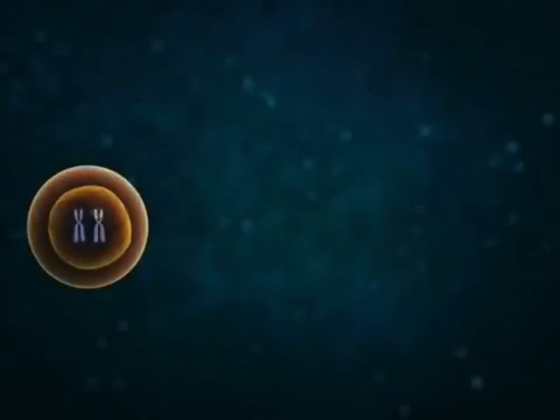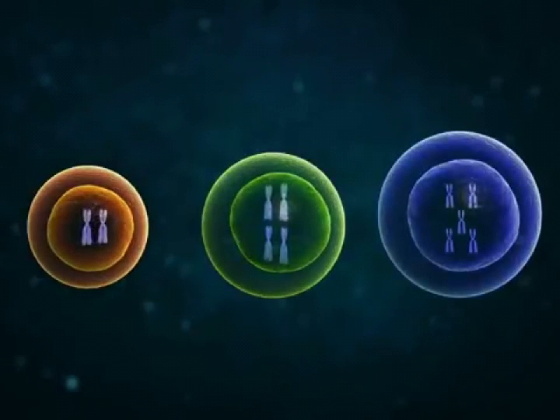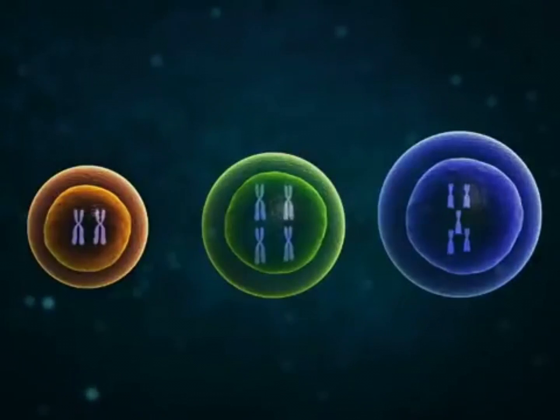The haploid cells contain small-sized nuclei in comparison to the nuclei of diploid cells. Likewise, the polyploid cells contain larger nuclei than the diploid cells.